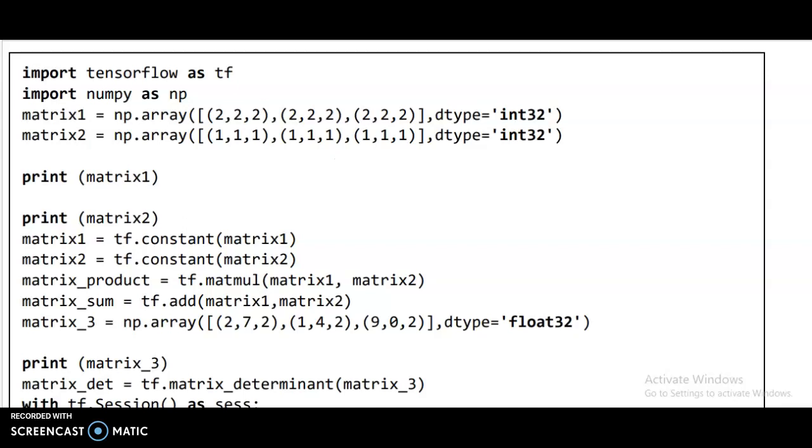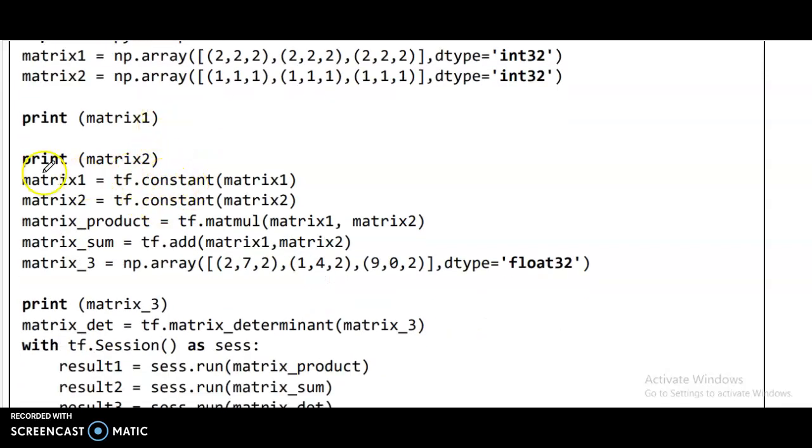Import tensorflow as tf, import numpy as np. matrix1 equals np.array with dimensions (2,2,2), dtype int32. matrix2 equals similar structure. Print matrix1, print matrix2. matrix1 equals tf.constant(matrix1), matrix2 equals tf.constant(matrix2). matrix3 equals tf.matmul(matrix1, matrix2).